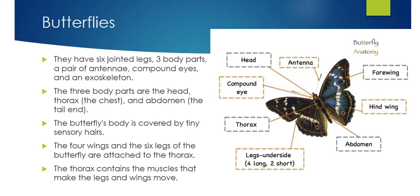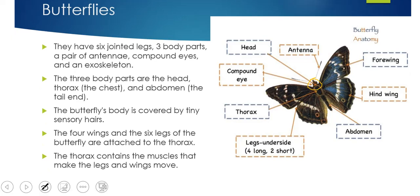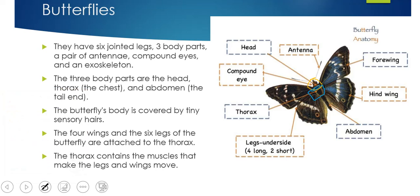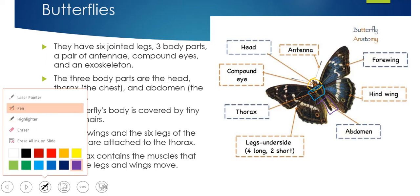The three parts of a butterfly body are the head, the thorax — the chest — and the abdomen. So the head is obviously at the top, then we have the thorax here in the middle, which is the chest area, and then the abdomen here, which is the end. The four wings and the six legs of the butterfly are attached to the thorax.